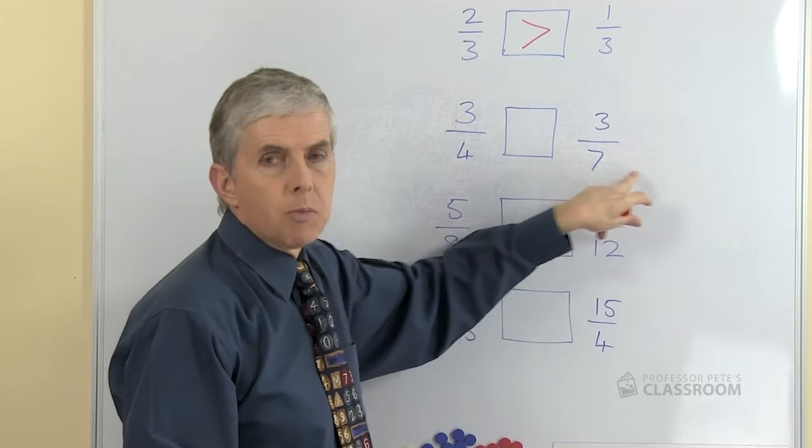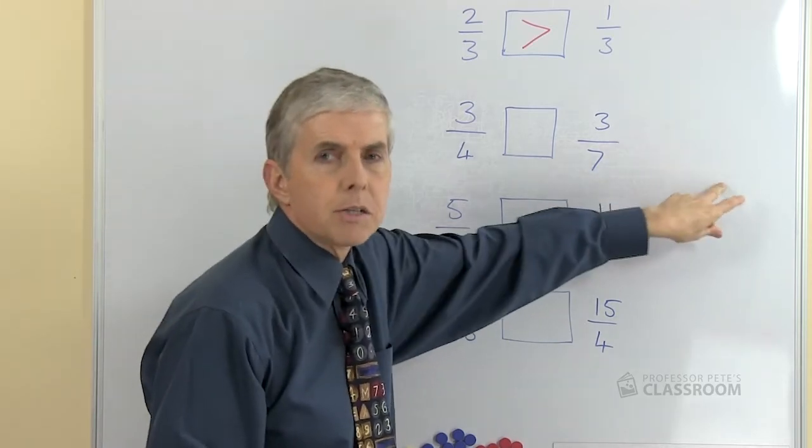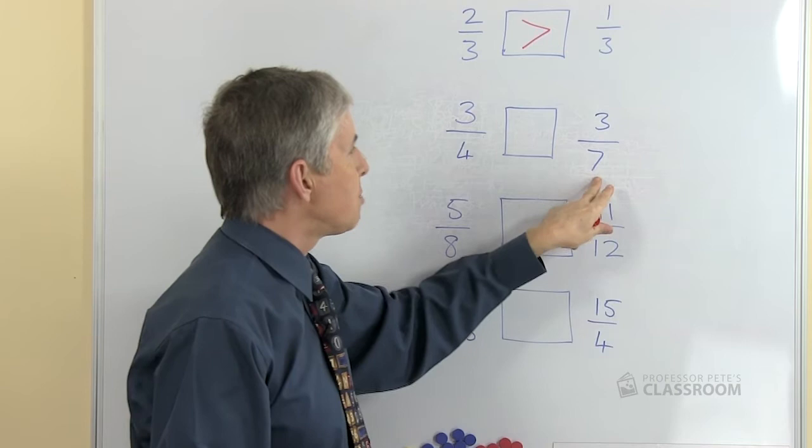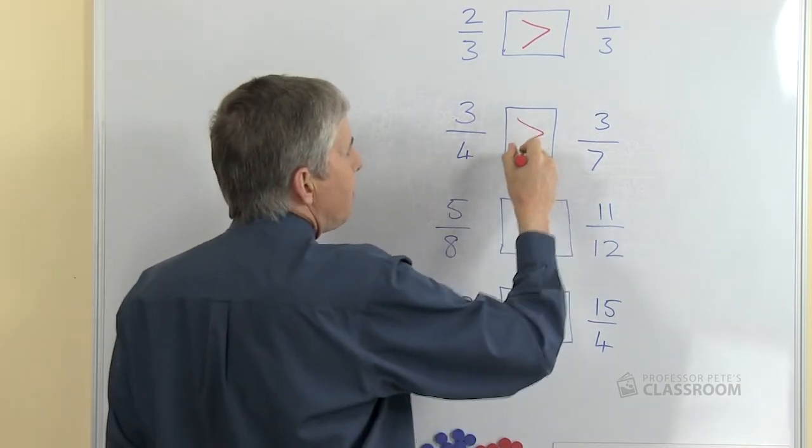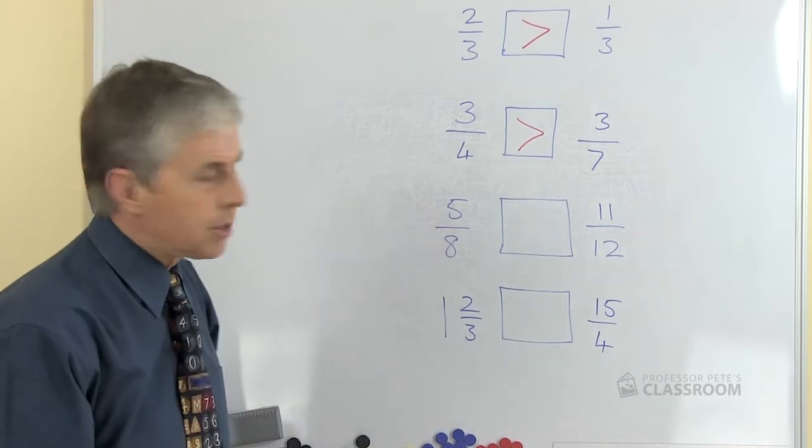A twelfth is smaller than a seventh, a hundredth is smaller again and so on. So as this number gets bigger the pieces get smaller. That means that three quarters must be bigger than three-sevenths.